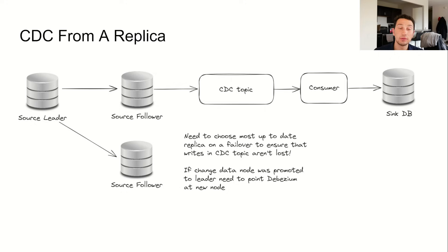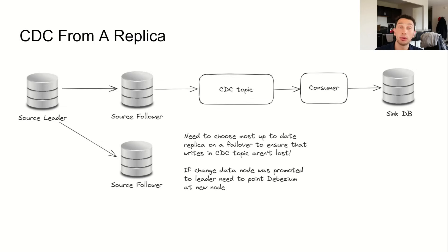We want to ensure that every write that has been sent to the CDC topic has been successfully replicated. A pretty easy way to do this would be to run Debezium on a replica. This isn't supported by every database that has a Debezium connector, but one that does work, for example, is MySQL. Imagine that we're running Debezium on a replica, but then on a failover, a less up-to-date replica is chosen to be the new leader, and some of the writes on our Debezium replica are now lost. We can avoid this by ensuring that we always choose the most up-to-date replica during a leader failover. There are many MySQL replication tools that can do this, for example, Orchestrator. Note that when we do so, if the new leader was the replica running the Debezium connector, we'd now need to point Debezium to a different replica. Fortunately, Orchestrator can actually hit a webhook upon a failover to alert us that this has happened. If it does, we can run some custom logic where we ask Orchestrator for the addresses of the followers and configure our Debezium connector to point to one of those. Debezium has logic to resume from its last committed replication log offset, so we should be good to go.